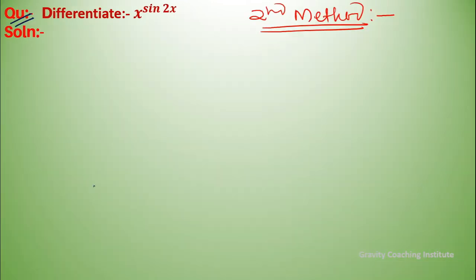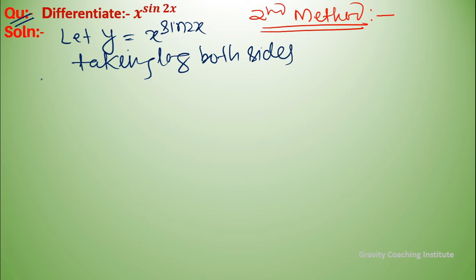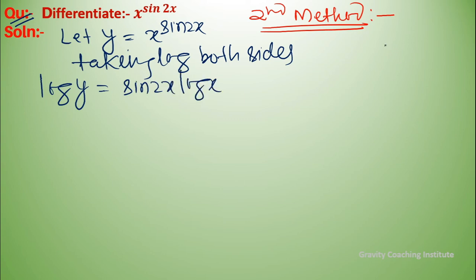Second method: let y equal to x to the power sin 2x and now taking log of both sides. So log y equals sin 2x log x, because the formula for log m to the power n gives n log m.